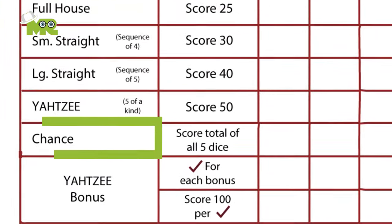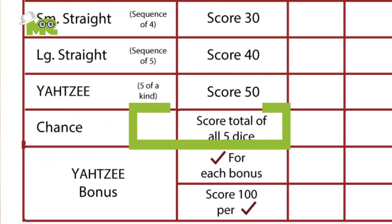Irrespective of the combination, the chance is the total of all five dice.